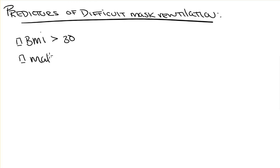Mallampati scores of 3 to 4 have also been implicated in difficult mask ventilations. Next, age over 57. Unfortunately, I've had a difficult time identifying why this is the case, but studies do demonstrate that it is a risk factor.